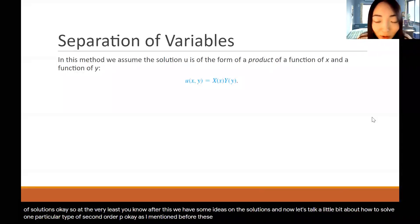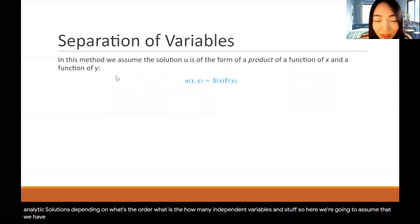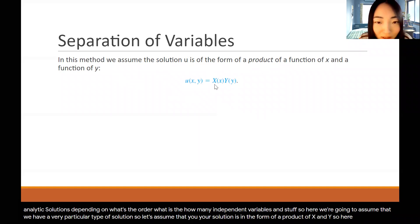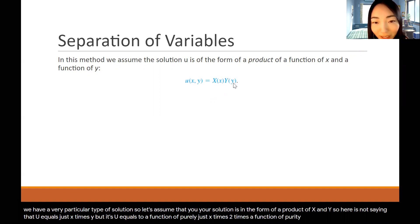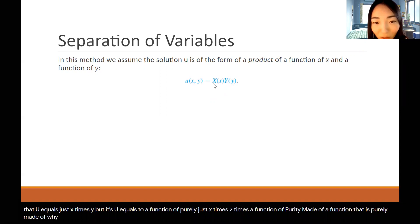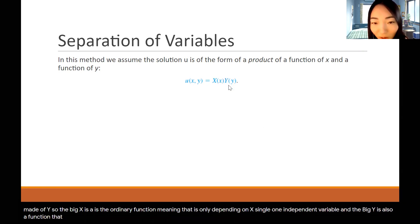As I mentioned before, these second order PDEs are very hard to solve and very hard to find analytic solutions, depending on the order, how many independent variables, and so on. So here we're going to assume that we have a very particular type of solution. Let's assume that U is in the form of a product of X and Y — not just X times Y, but U equals a function purely of X times a function purely of Y. The big X is an ordinary function depending only on X, and big Y is a function that solely depends on Y.